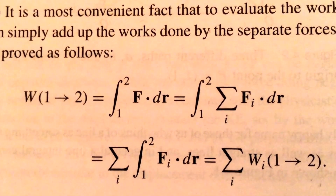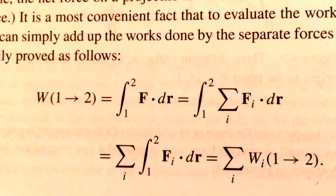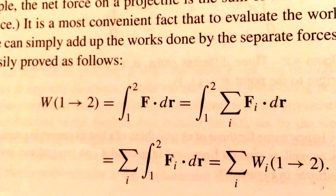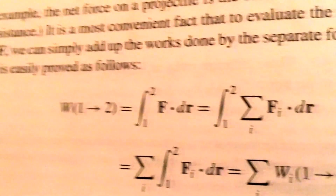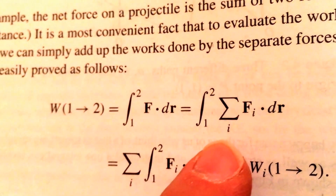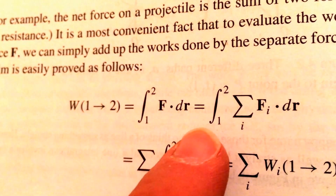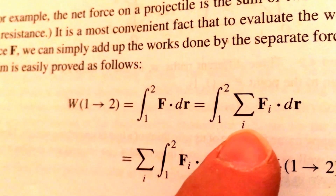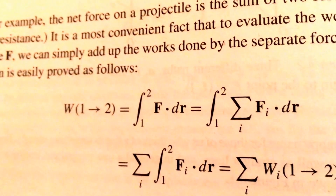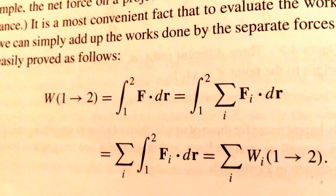One important thing to keep in mind is that we're thinking about the net force applied to the particle. There can be several different forces applied, and in this expression we have a sum over i, where i represents all the different forces applied to the particle. So this line integral really involves the sum over all the forces dotted into the displacement vector — we're interested in the net force.